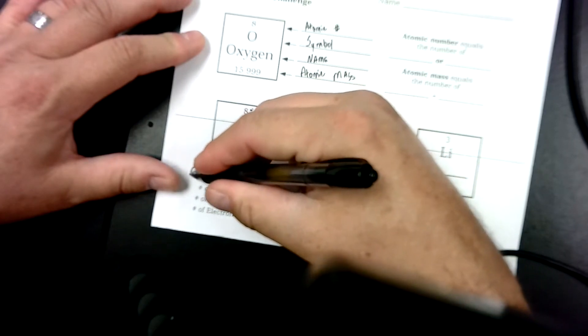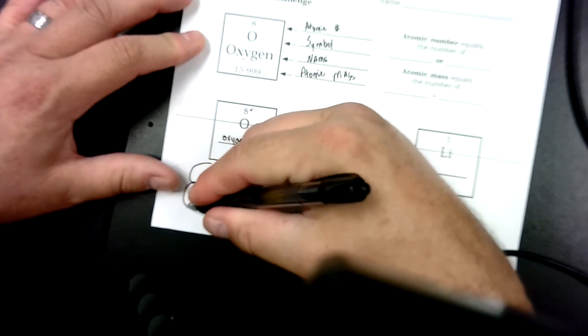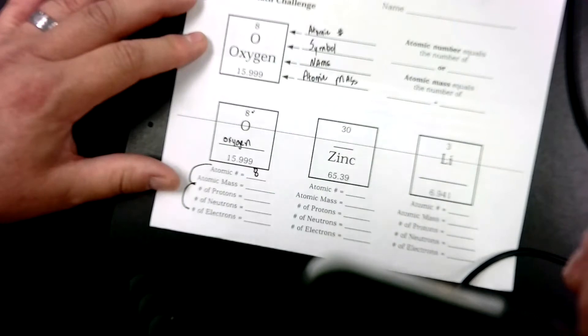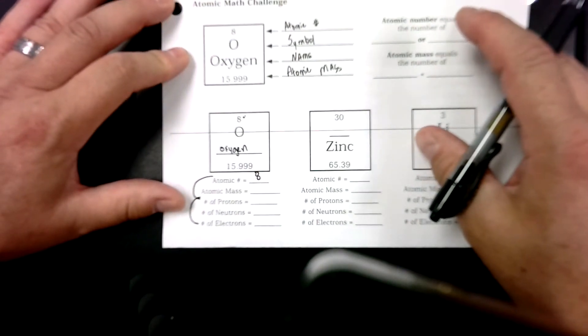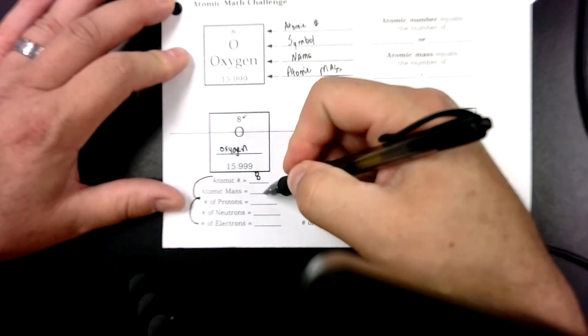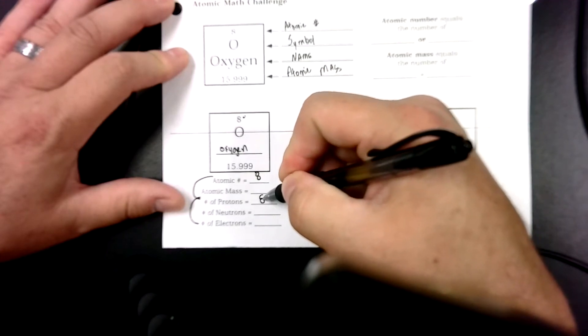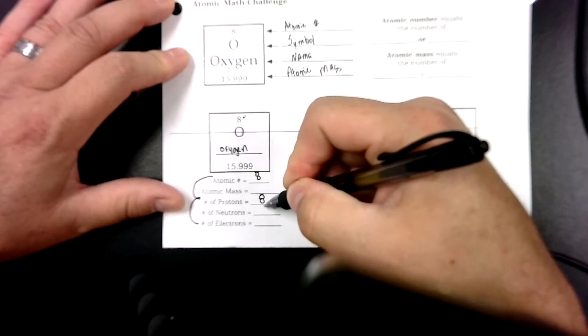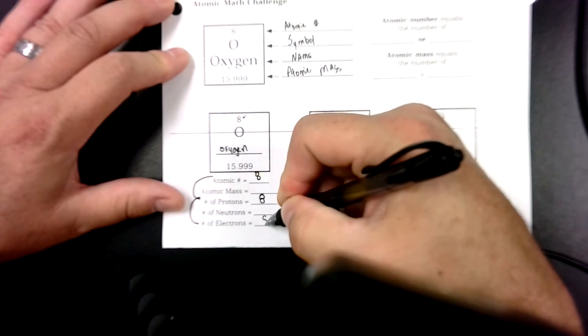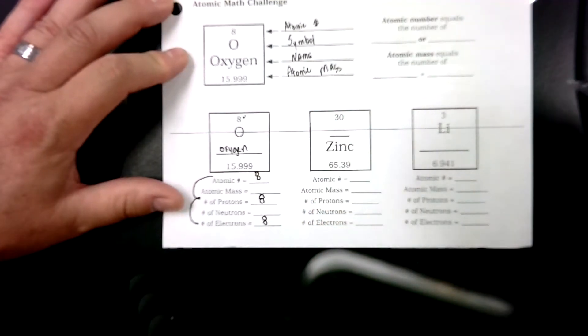These three - atomic number, number of protons, and number of electrons - those are going to be the same for the whole atom. So if it's atomic number 8, it's because it has 8 protons. And if it has 8 protons, and it's a balanced atom, which we're going to assume they all are, it has 8 electrons.